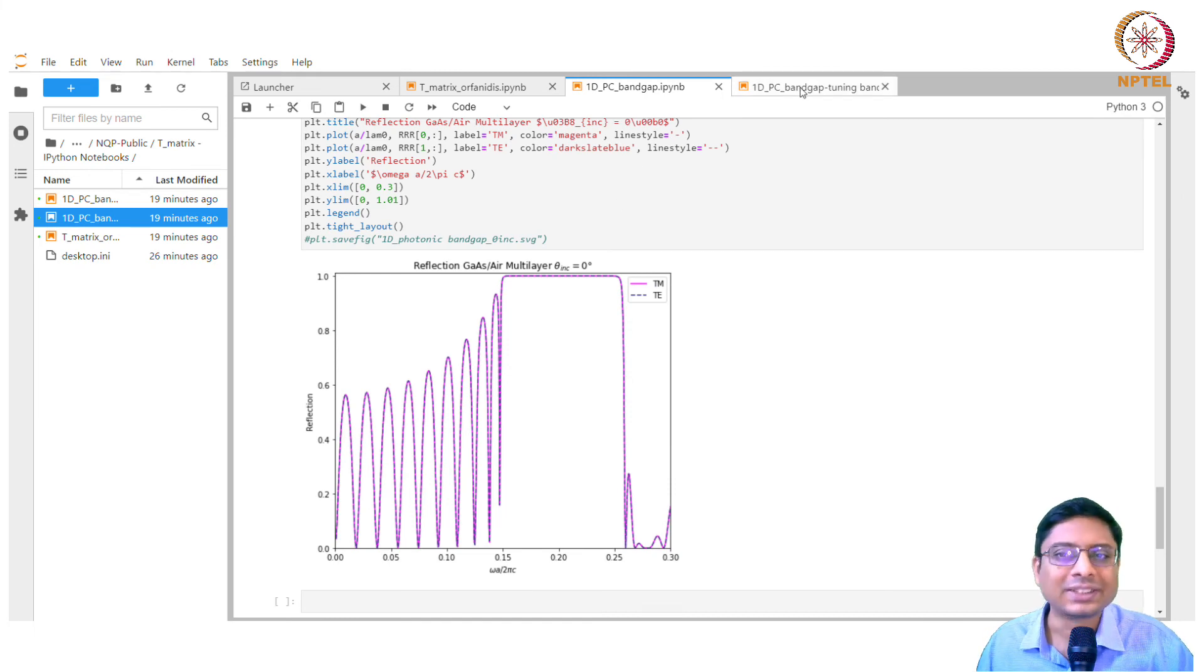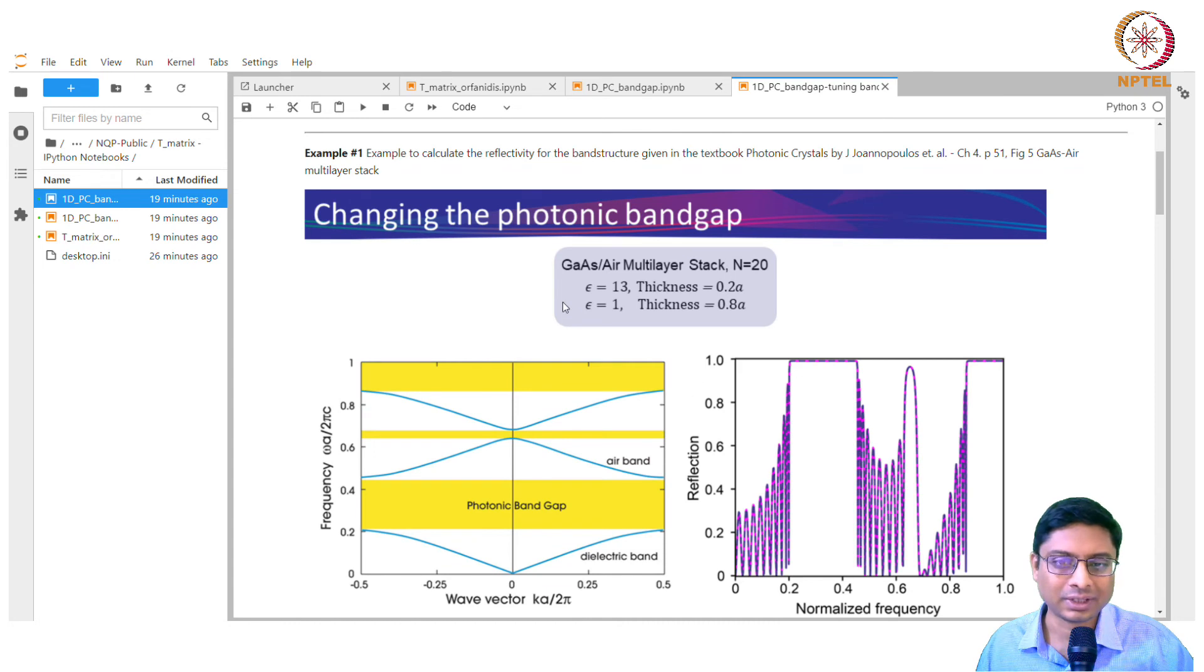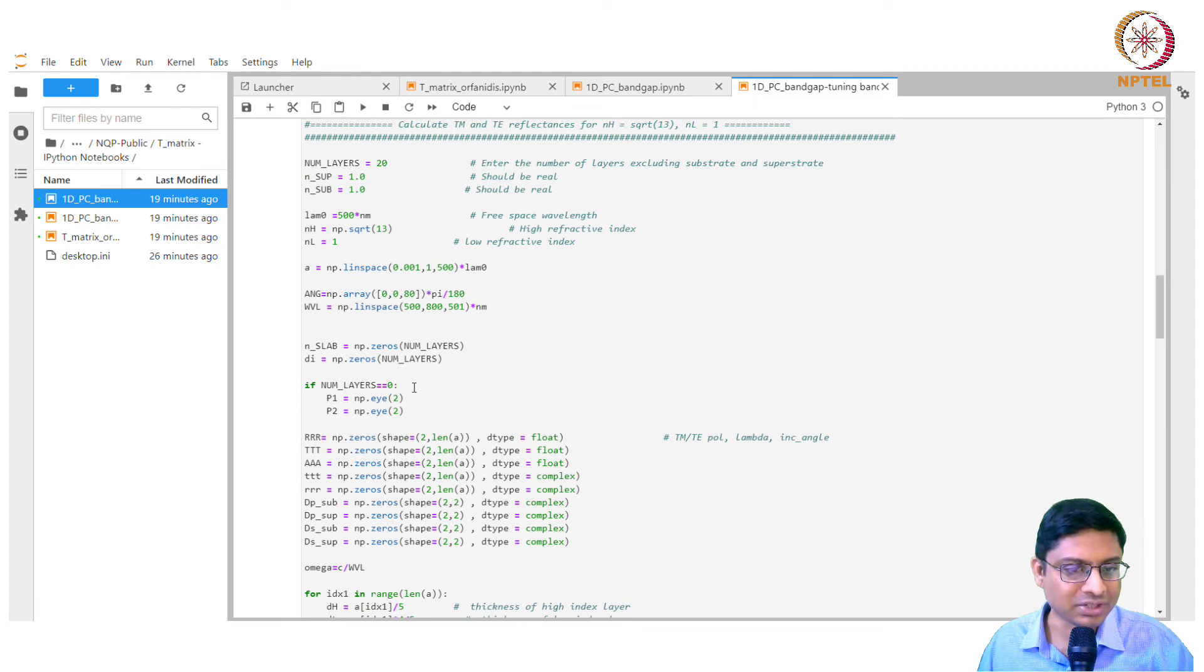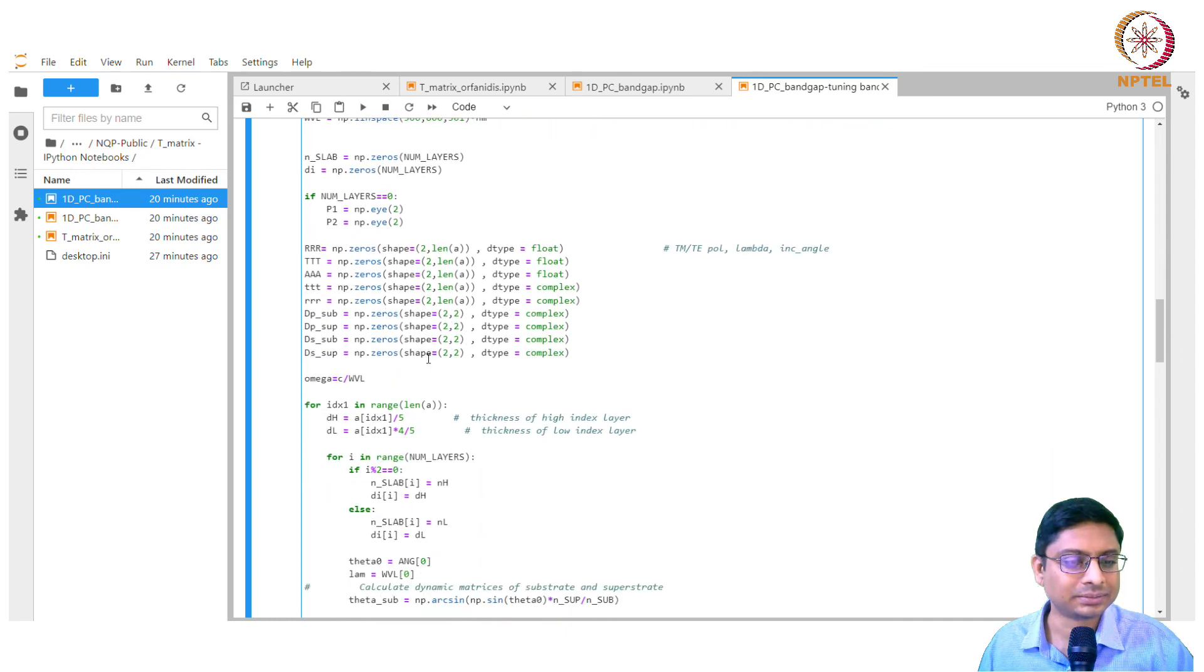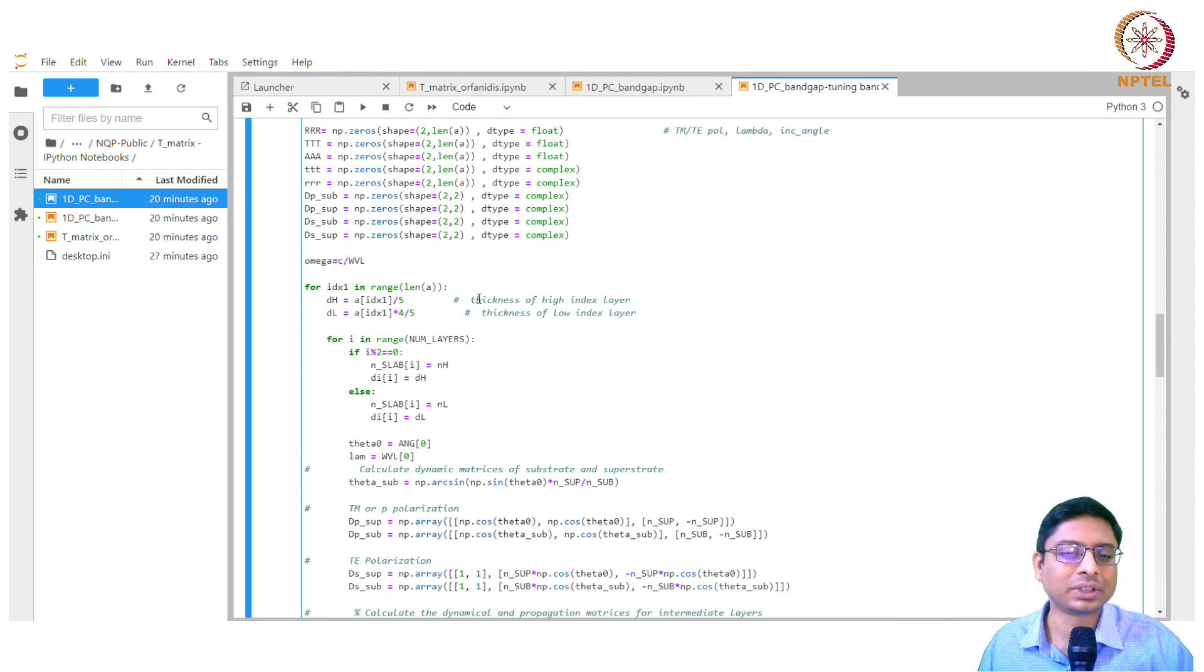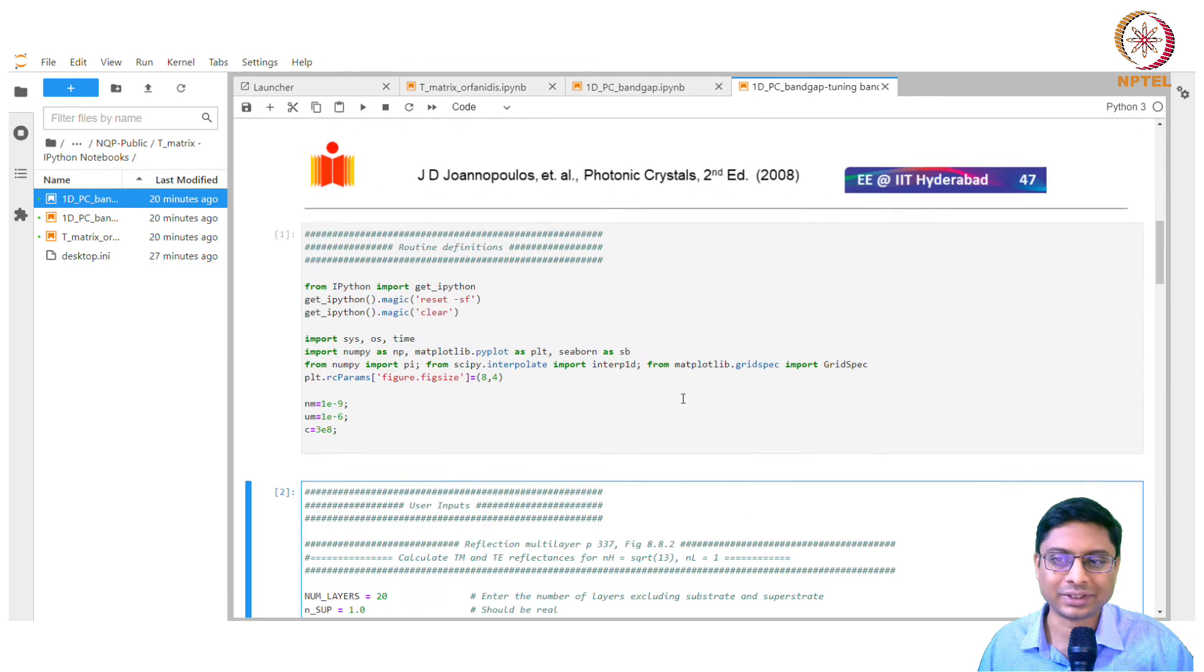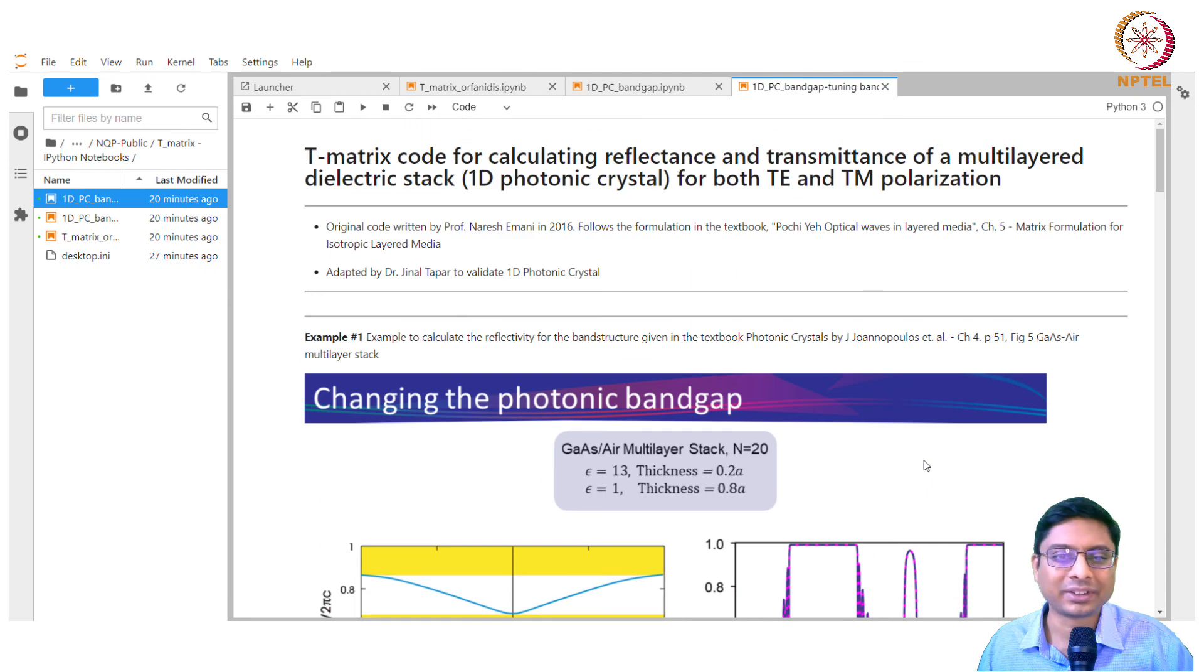We had seen one more example of this multilayer stack, but this time with thickness of 0.2 and 0.8 of the periodicity. We change the thickness so we get a tuning of the band gap. Again, the same example, everything else remains the same except we change the thickness of the layers. The high index layer we took to be a by 5, the low index layer a times 4 by 5. Once we do that, you get this nice curve which we've shown in the class.